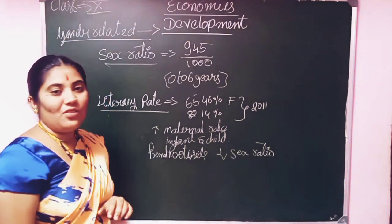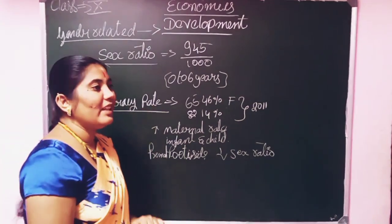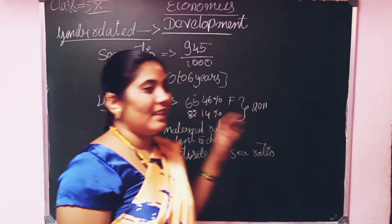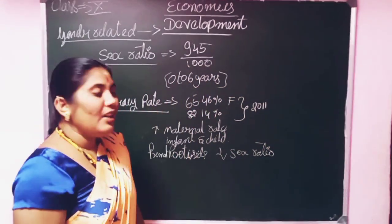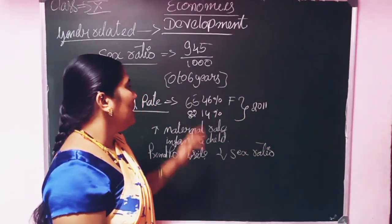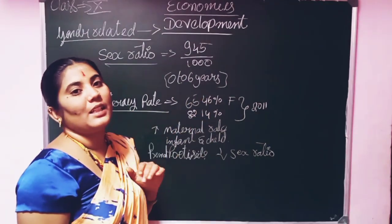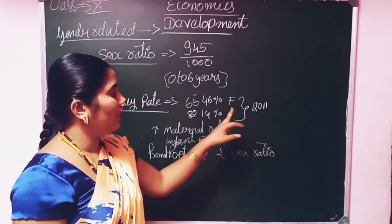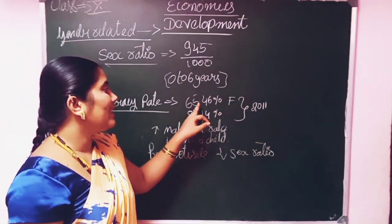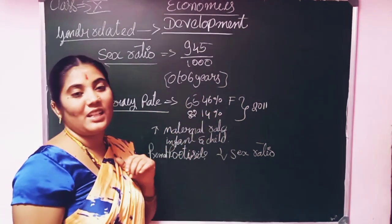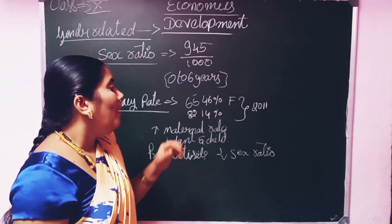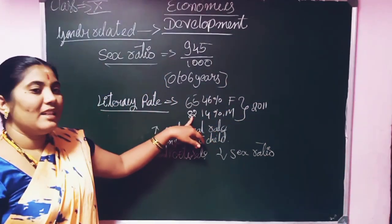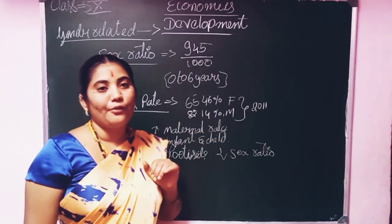The next topic is the literacy rate. What is the literacy rate? How many people are educated in the country is called the literacy rate. According to the 2011 census, 65.46 percent is the female literacy rate. The male literacy rate is 82.14 percent.